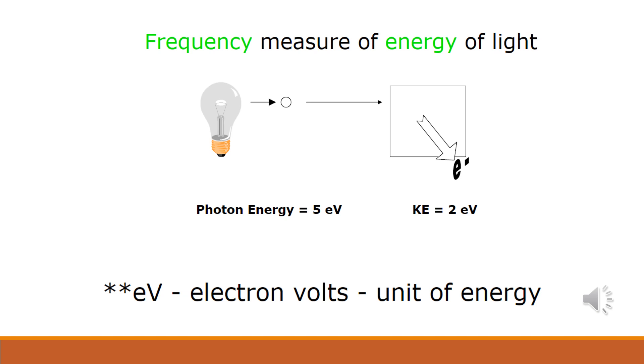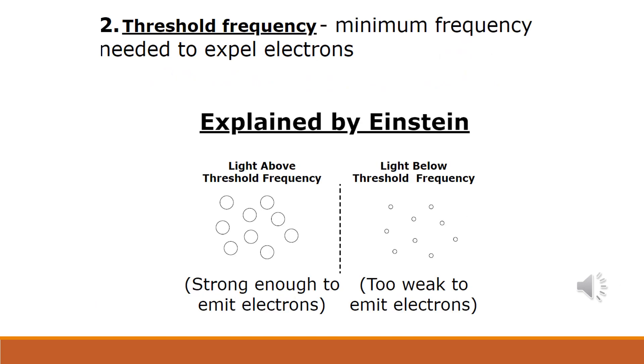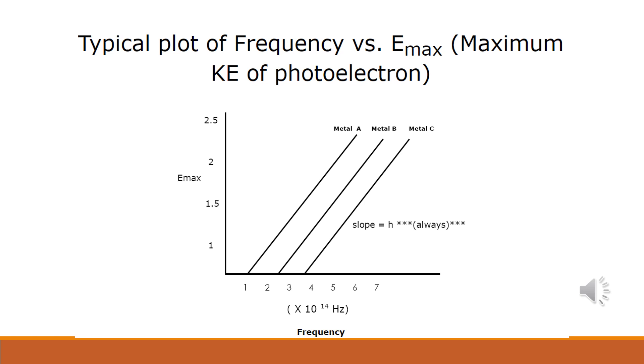Einstein proposed that the difference between the maximum energy of an ejected electron and the energy of the light source could tell you how much energy, how much work it took to remove the electron. If a photon or a packet of light energy didn't have enough energy to remove the electron, you would see no emission. If each photon did not have the energy to remove an electron, it didn't matter how bright you made the light source, no emission would occur. When you plotted the frequency versus the maximum kinetic energy of the ejected electrons, the plot always started at the threshold frequency of the metal and had a slope equal to Planck's constant.